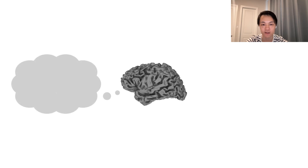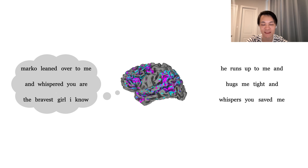The decoder can also recover the gist of what the user was thinking. In this example, the user thought the words, "Marco leaned over to me and whispered, you are the bravest girl I know." The decoder predicted the words, "he runs up to me and hugs me tight and whispers, you saved me."